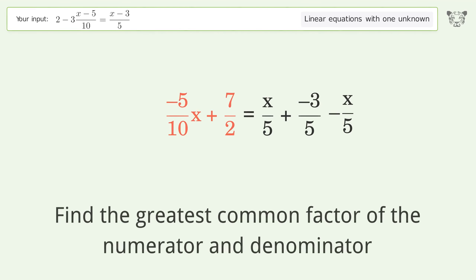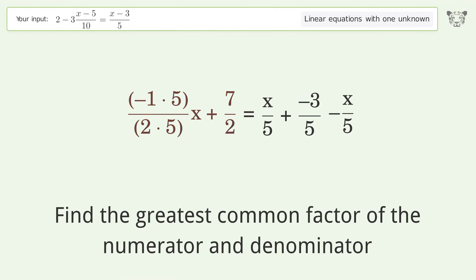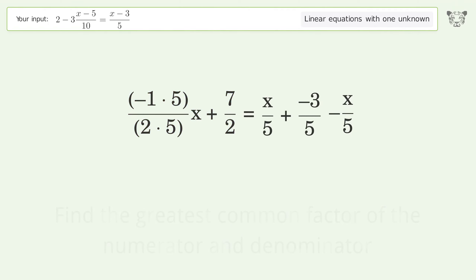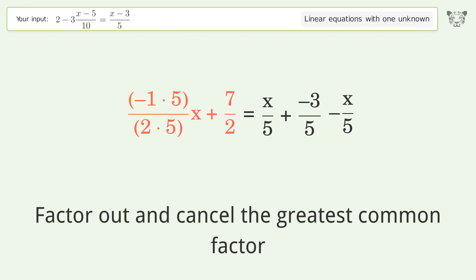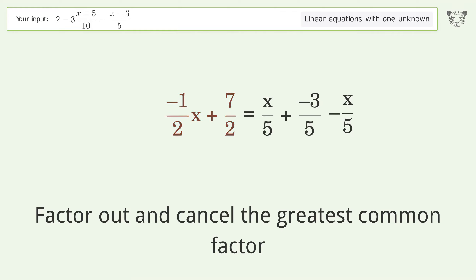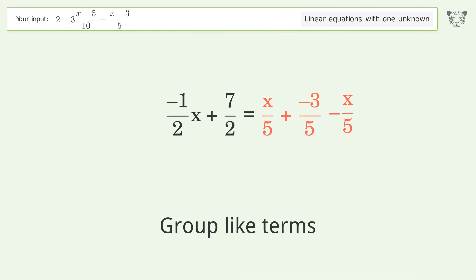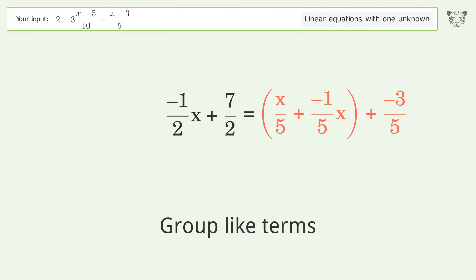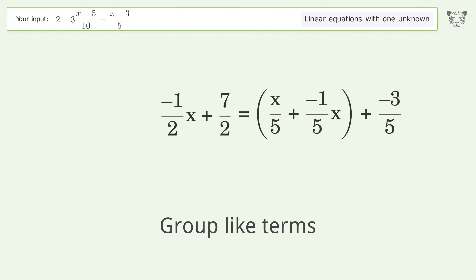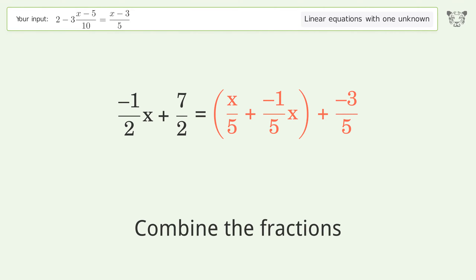Find the greatest common factor of the numerator and denominator. Factor out and cancel the greatest common factor. Group like terms. Combine the fractions.